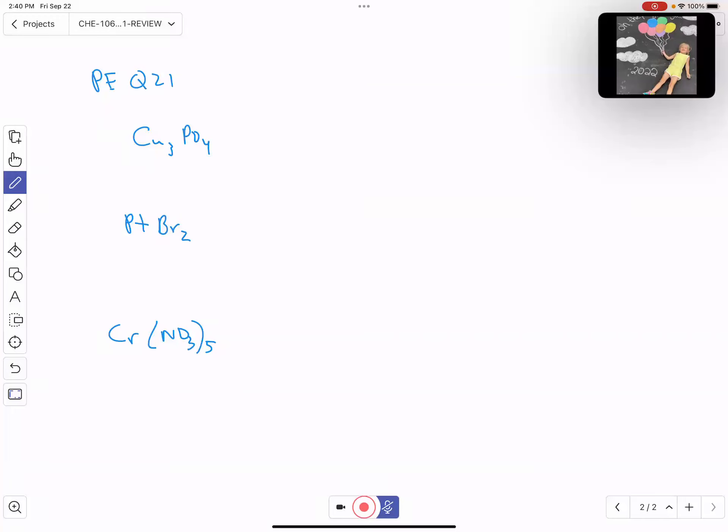You'll definitely have some nomenclature questions on the exam. All of these are transition metal ionic compounds - metal with non-metal.